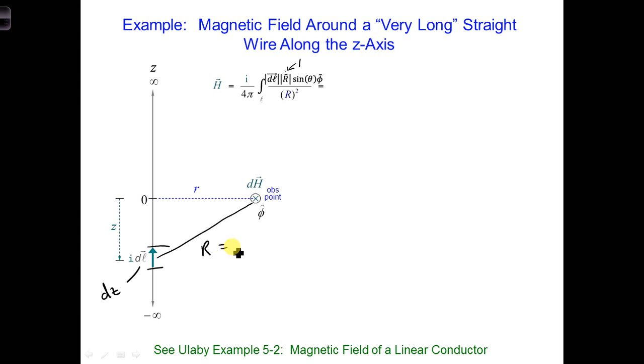This means that r, in this case, is square root of r squared plus z squared. There's r and z.